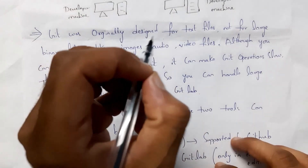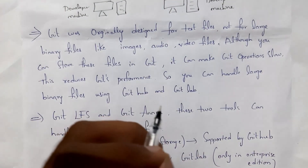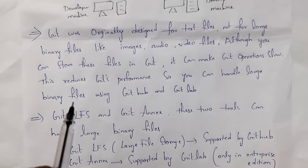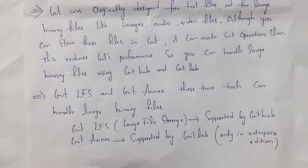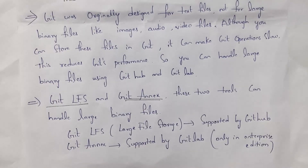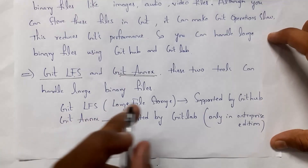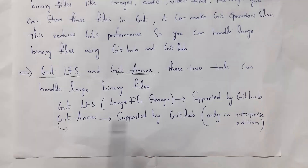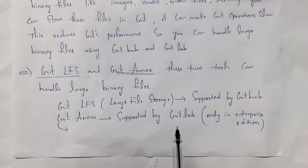Git is mainly designed to handle text files. If you store large binary files like images, audio, or video in Git, it will become slow and decrease performance. For large binary files, you can use GitHub and GitLab. There are two main tools to handle large binary files: Git LFS (Large File Storage), which is supported by GitHub, and Git NX, which is supported by GitLab. Note that Git NX is not available in the free version of GitLab — you need to pay for the GitLab Enterprise Edition.